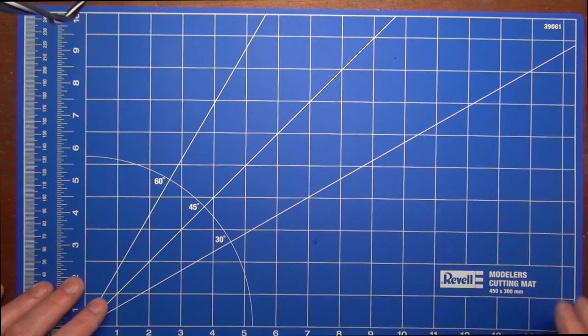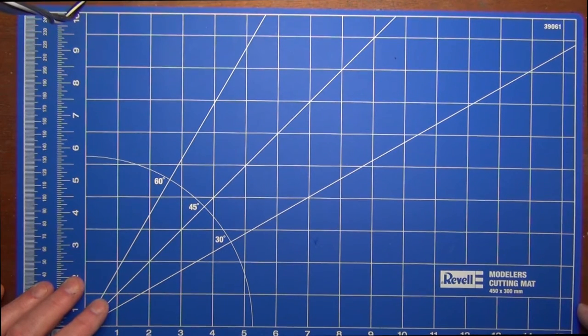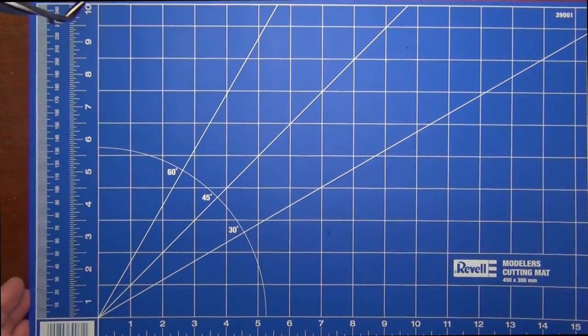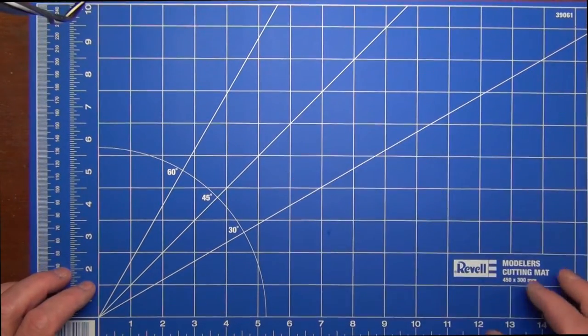I didn't really need another cutting mat, but I got this one because I was looking for one in a color that would work better with the videos when I'm doing some of the builds. This is the Revell A3 size modelers cutting mat, 450 by 300 millimeters, product code 39061. As you can see, it comes in a nice attractive blue color which is similar to Revell's corporate colors.